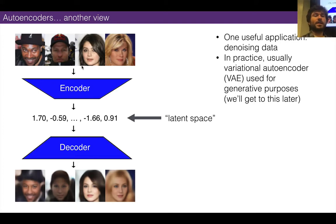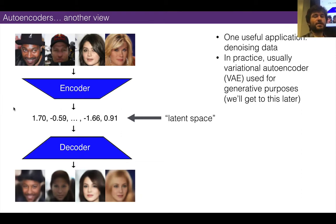Another way of thinking about autoencoders is that it's a neural network with two parts — almost like two neural networks. One is an encoder half, which turns the image into a set of numbers. And then one is a decoder. You could just grab the decoder, put in random numbers, run them through the decoder, and you'll get something that looks like a face. That's what we did with PCA as well.